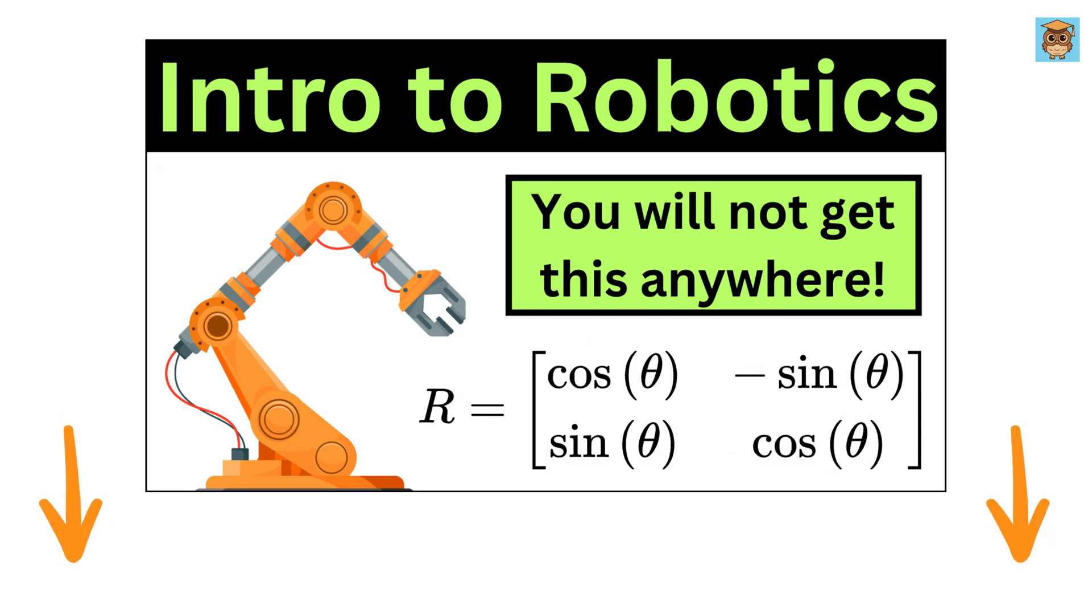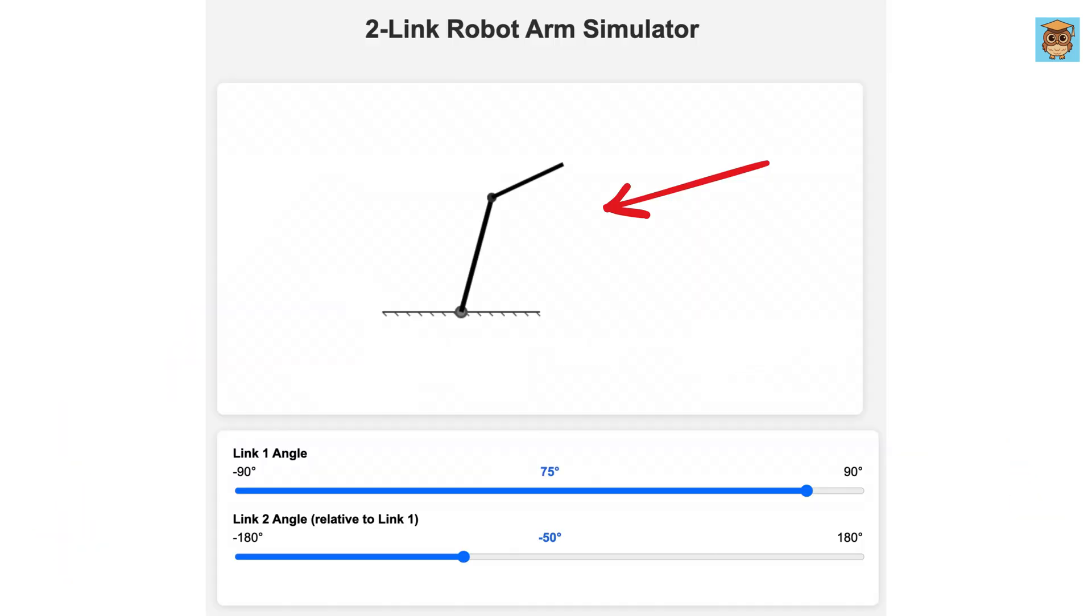Check out the description for the first and second parts of this series. Assume I have a two-link robot with the end effector represented as a point at the end of link two. Now we place an object somewhere in space represented by this red dot and we want the end point of the second link or the end effector to reach the object in order to pick it up.